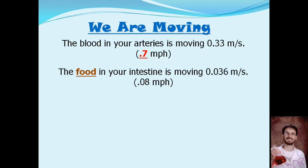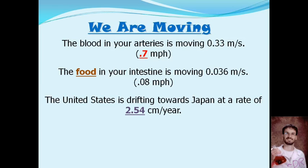Now, if we start to get bigger and look outside of our bodies, the United States, the continent that we are standing on, or sitting on, or living on, is moving across the surface of the earth because of plate tectonics. The United States is drifting west towards Japan at a rate of 2.54 centimeters per year. So, even if you are sitting as still as you possibly can, you are still moving 2.54 centimeters per year to the west. Eventually, after enough years, we'll crash into Japan, and then into China, and we'll make a huge mountain range, the same thing that happened when India and China crashed into each other and made the Himalayas.